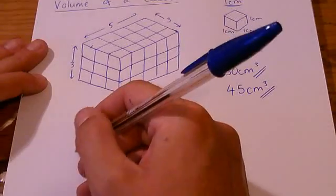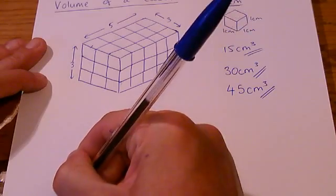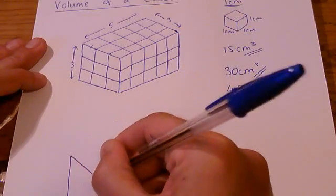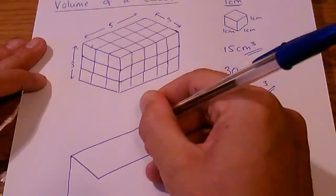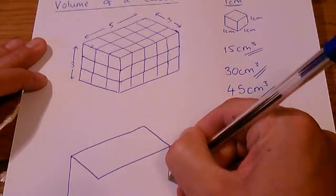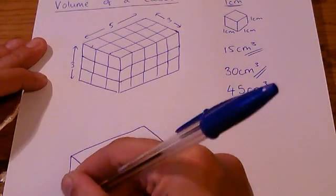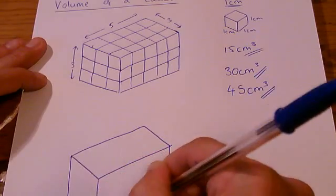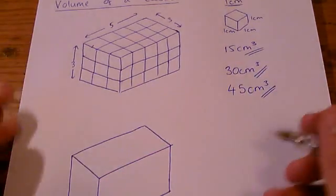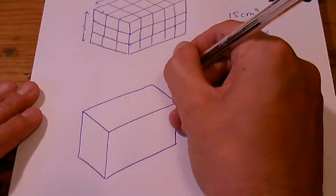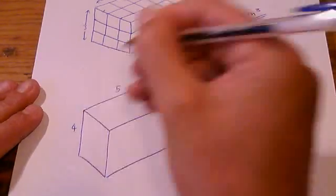And if I was to draw this out, let's do the next one, just so I've got a different number to work with. So I'm going to draw out this box without the cubes. This would be the next one in the sequence: 3, 5, 4.